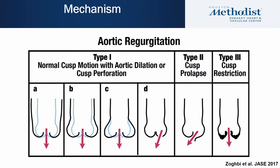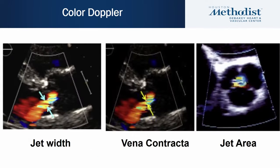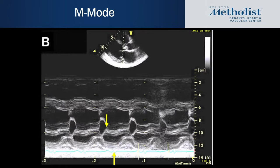Mechanisms of AI include aortic dilation, cusp perforation, cusp prolapse, or cusp restriction. Color Doppler is helpful in evaluating AI severity — we look at jet width relative to the LVOT, the vena contracta, and the jet area. M-mode can show early premature closure of the mitral valve before the QRS complex. Fluttering of the anterior mitral valve leaflet can also be seen in AI, but fluttering alone is not specific for severe AI — it is the premature closure that is specific for significant AI.